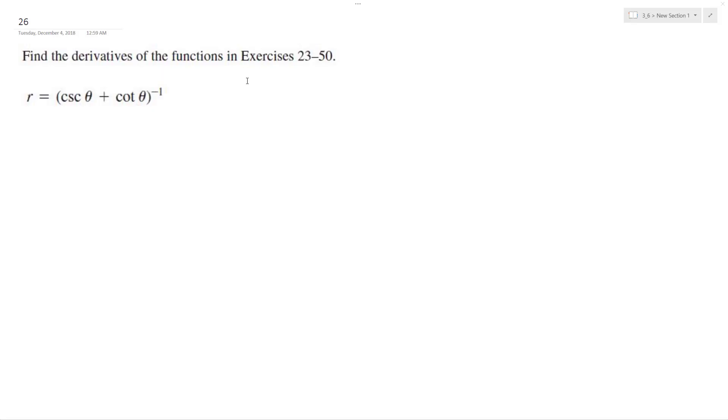So we want to find the derivative of this function. First off, we can start by saying u is equal to cosecant theta plus cotangent theta. And then du will be equal to the derivative of the cosecant, which is negative cosecant x cotangent x, and the derivative of cotangent is negative cosecant squared x.